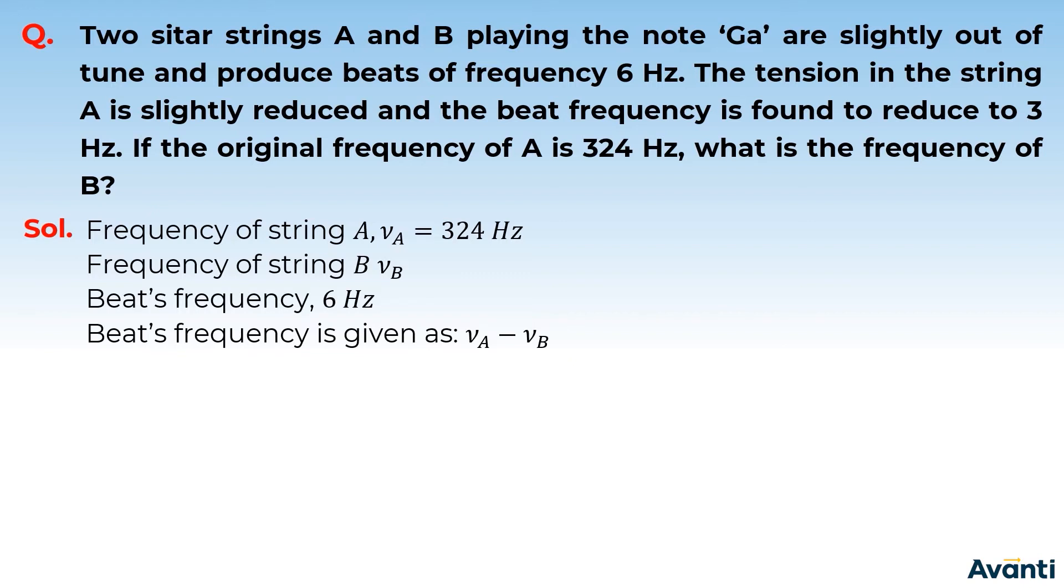Beat frequency is given as νA minus νB, so νB can either be 318 Hz or 330 Hz. Since initially you heard a 6 Hz beat frequency, you can take A's frequency plus or minus 6, so both options are possible: 318 and 330.